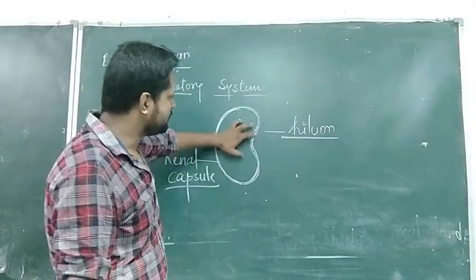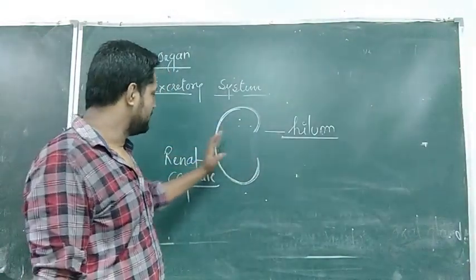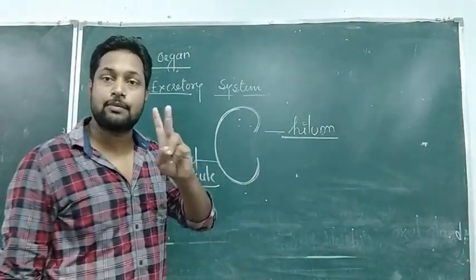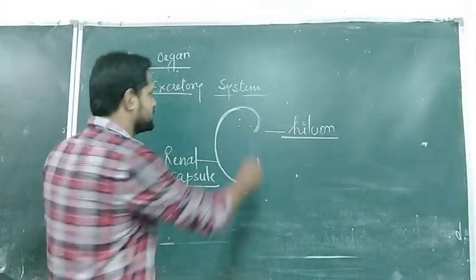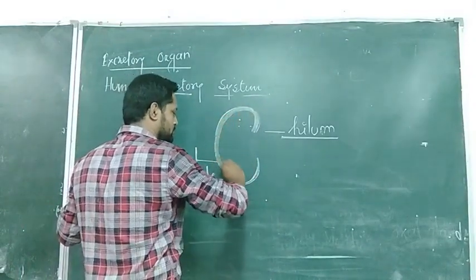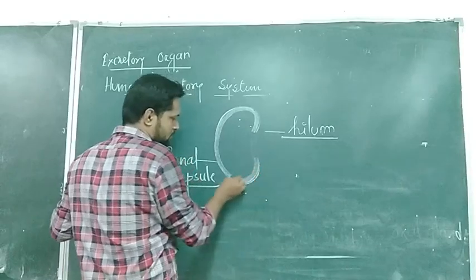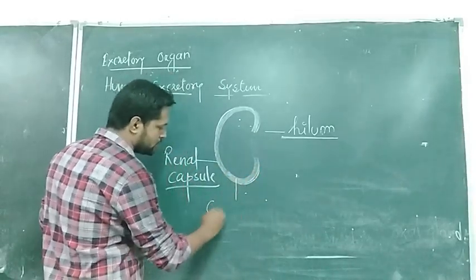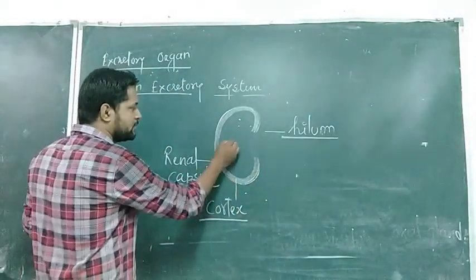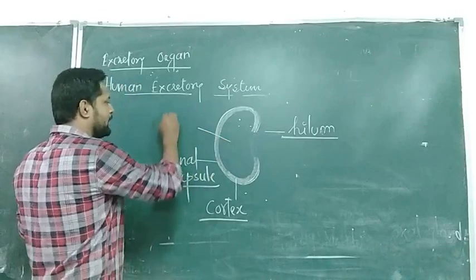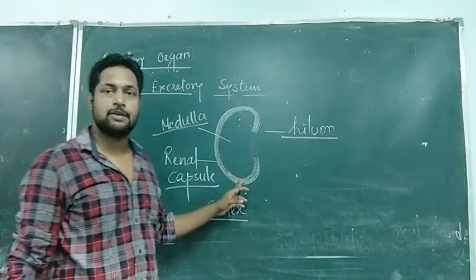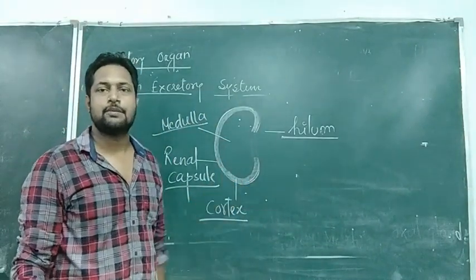Now let's look inside the renal capsule. Inside the renal capsule, the kidney has two regions. The outer portion is known as the cortex. The inner region is known as the medulla.